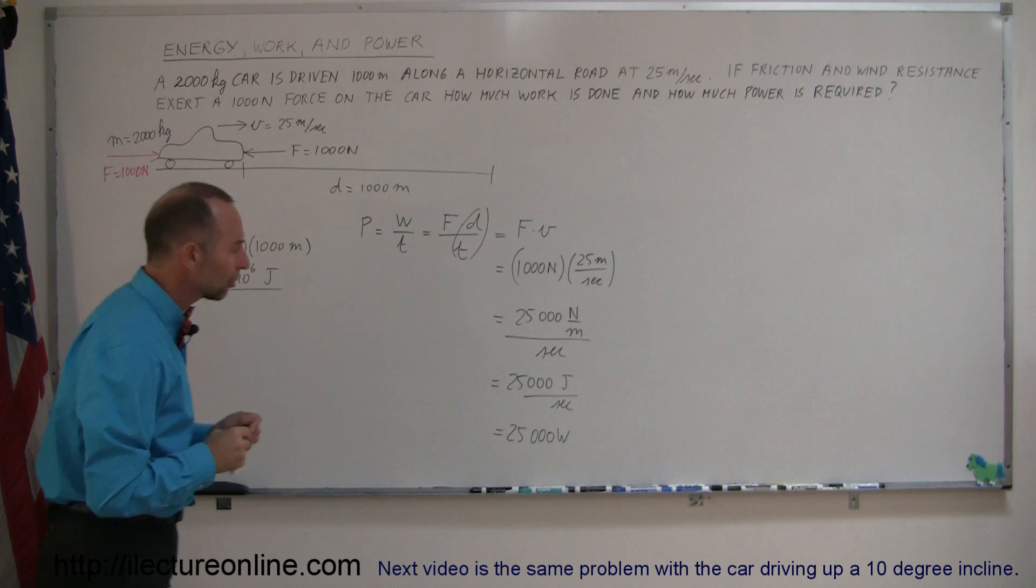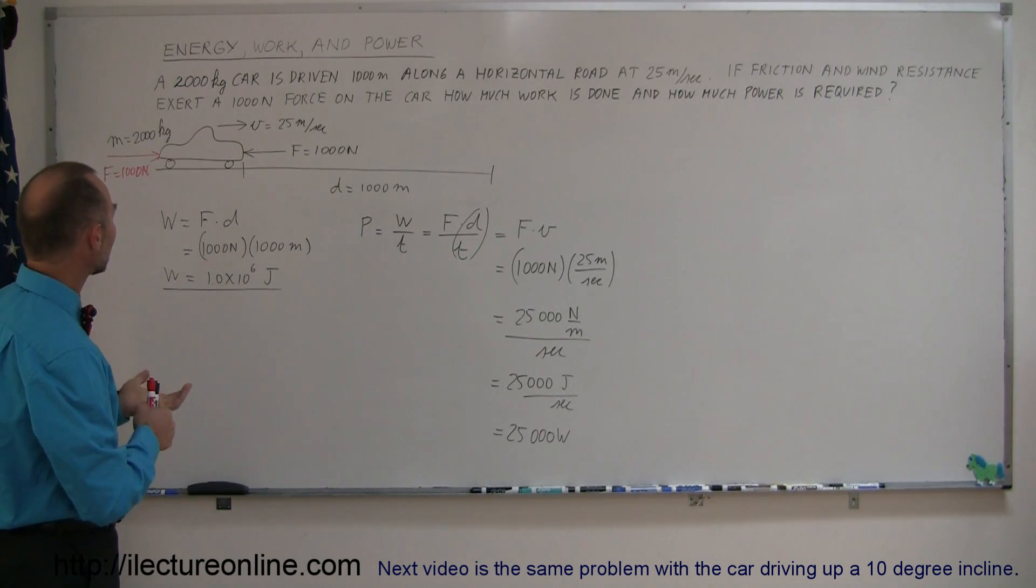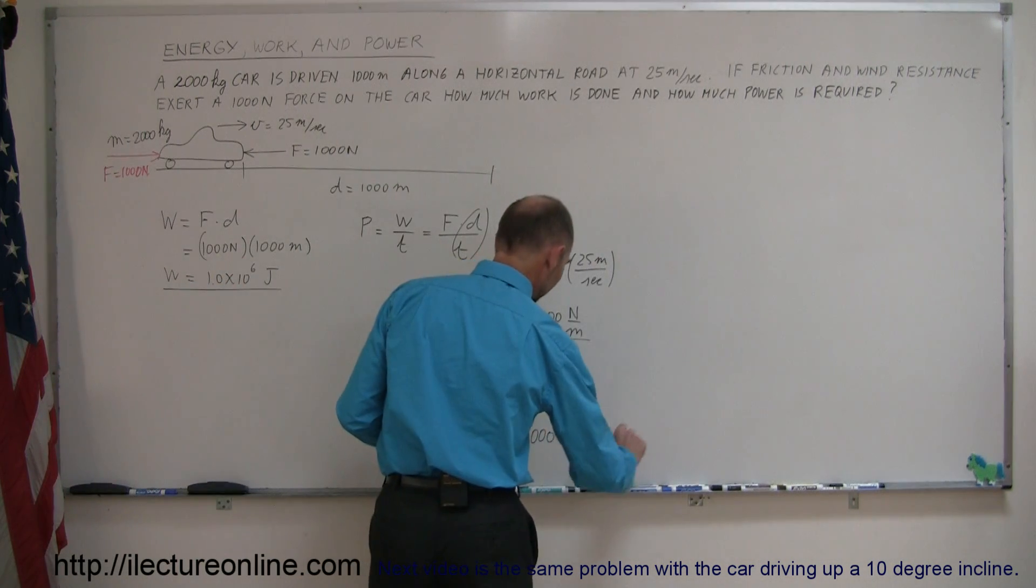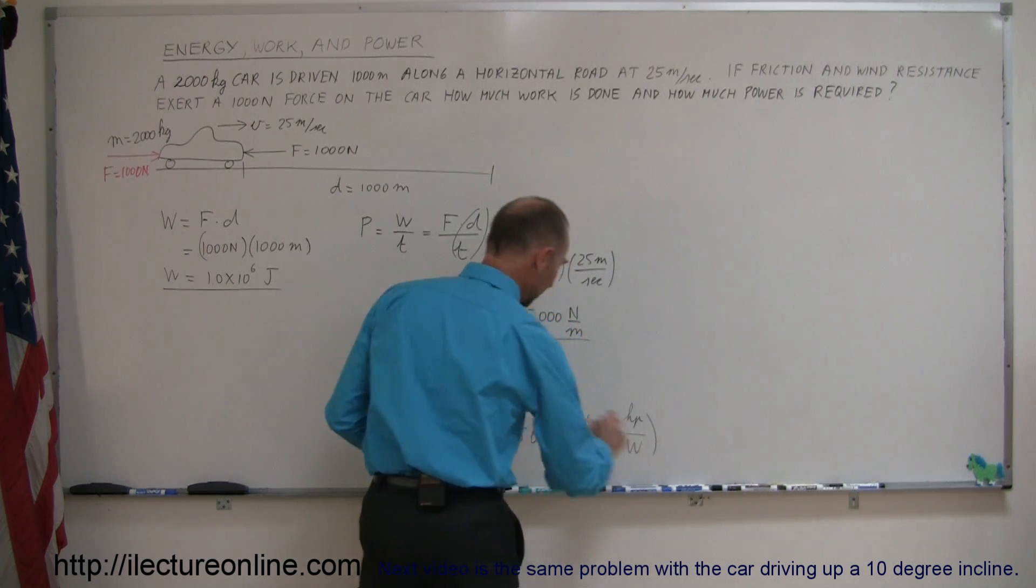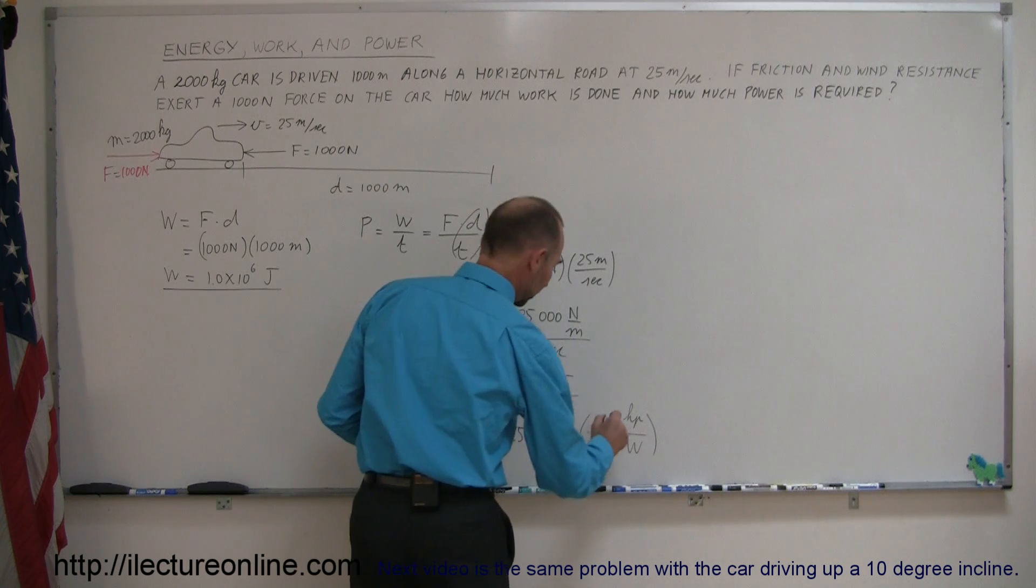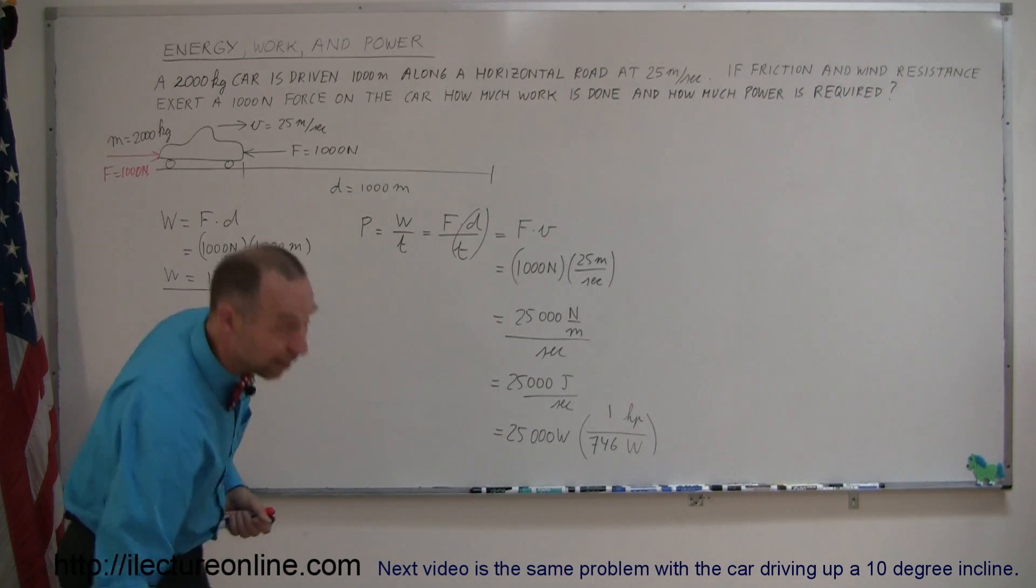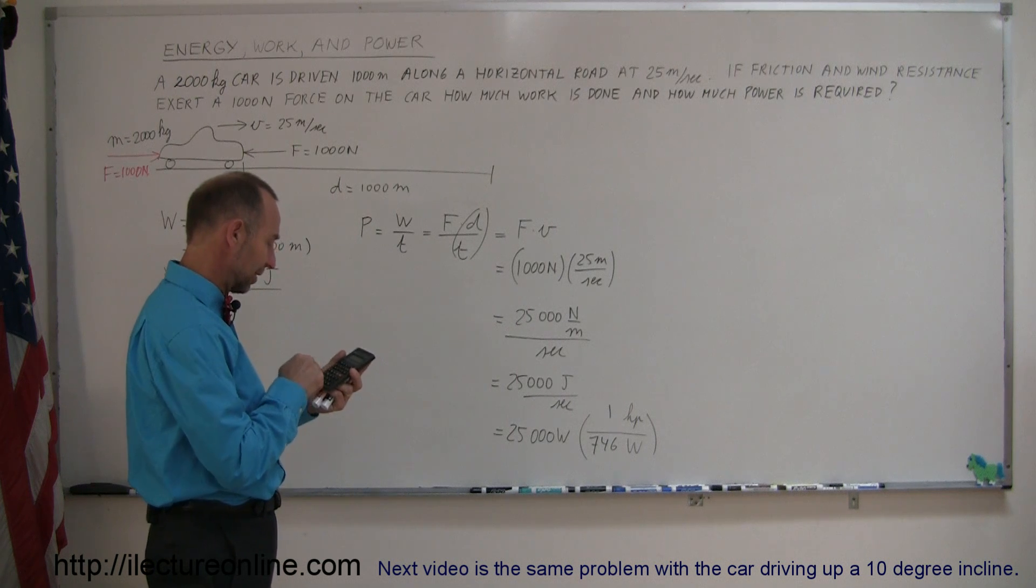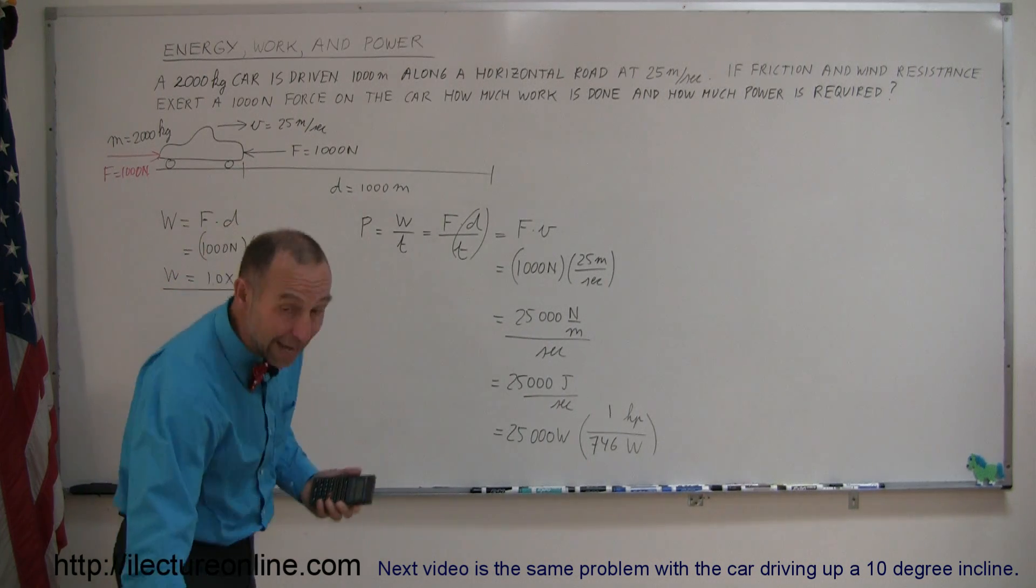Now, we typically don't talk too much about cars having power in terms of watts. We tend to talk about cars having power in terms of horsepower. So, we can convert this, and it turns out the conversion factor to go from watts to horsepower, so we have horsepower at the top, watts at the bottom, because we want to get rid of that, and it turns out that one horsepower is 746 watts. So, if we divide 25,000 by 746, we have the power required in terms of horsepower. So, let's find out. 25,000 divided by 746, and that looks like we need 33½ horsepower.